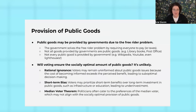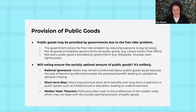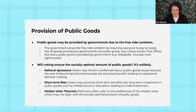Then we move on to discussing the provision of public goods — thinking through who provides them. Governments may provide public goods, but they don't have to. We might think of Wikipedia or YouTube as public goods, and they're not provided by government. Some government-provided goods, like library books and post offices, are not public goods — they're rival. If you check out a library book, somebody else cannot have that same book. We solve the free rider problem through taxation, but there are problems with not getting the socially optimal amount of public goods because of rational ignorance, short-term bias, or the median voter not aligning with optimal provision.